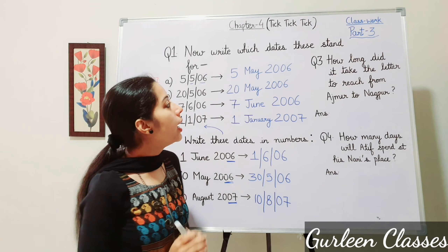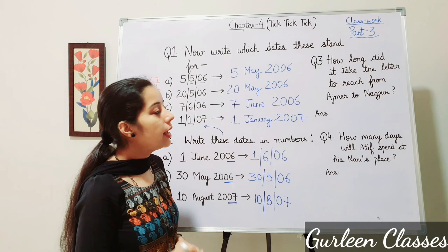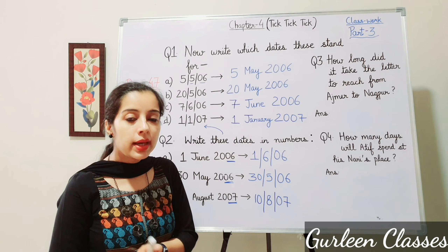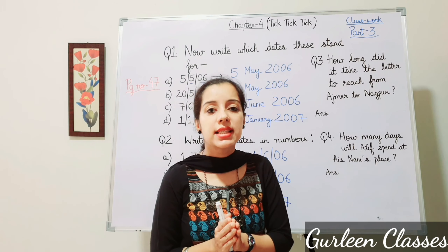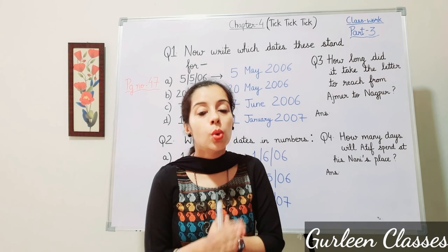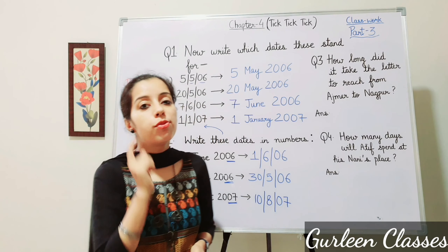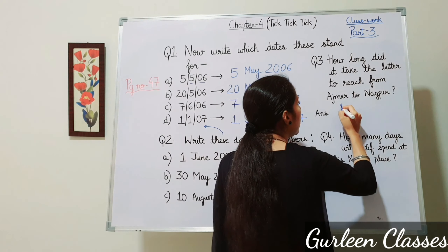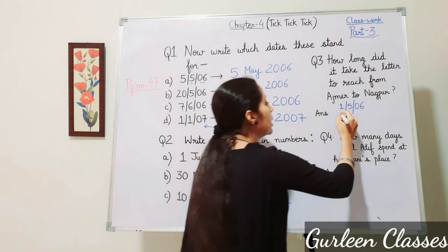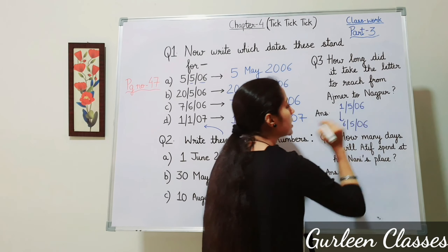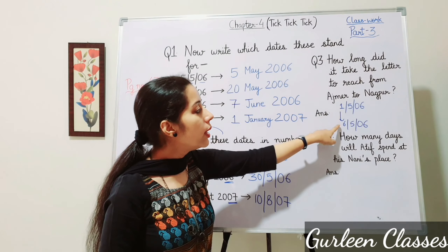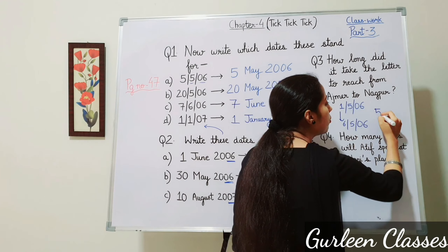Question 3: How long did it take the letter to reach from Ajmer to Nakur? In the story, Atif wrote the letter on 1st May 2006, and Shabana received it on 6th May 2006. So how long did it take? 6 minus 1 equals 5 days.